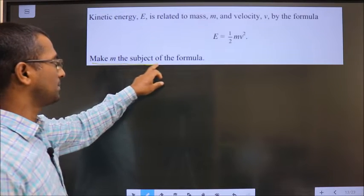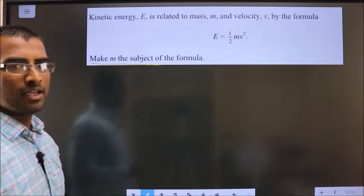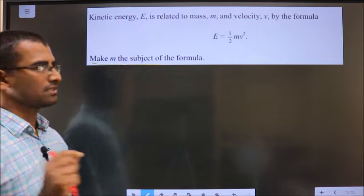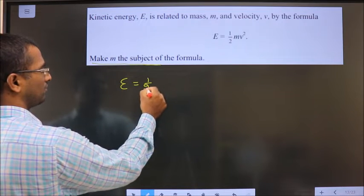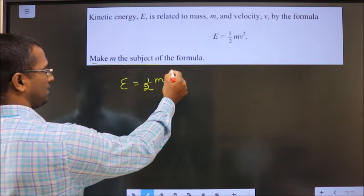Make M the subject of the formula. The given equation is E equals half Mv squared.